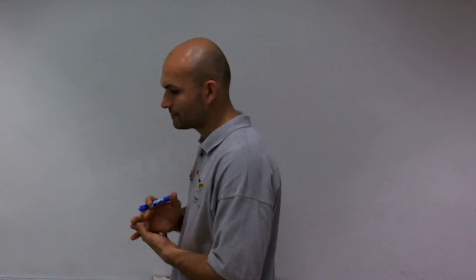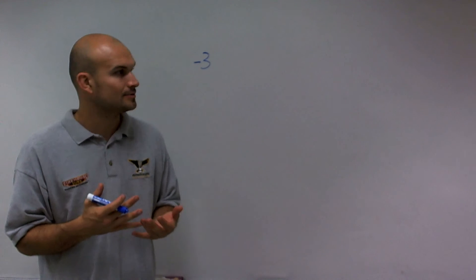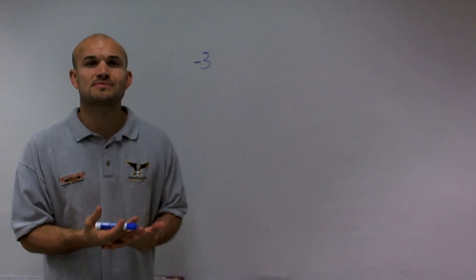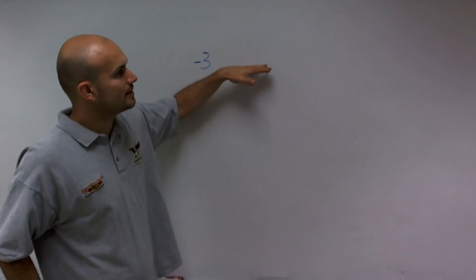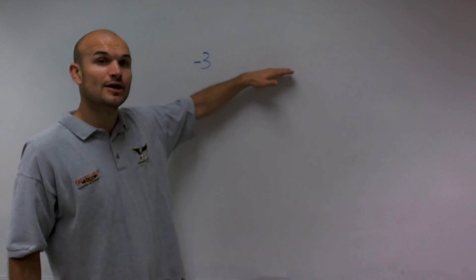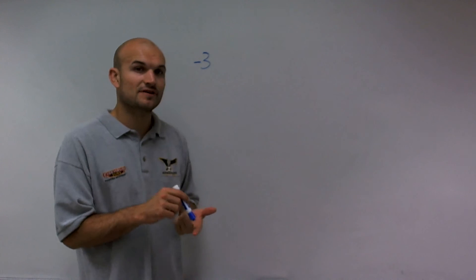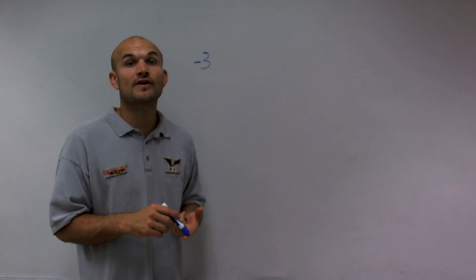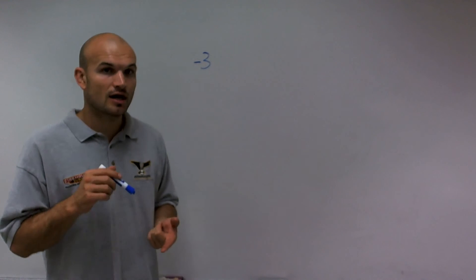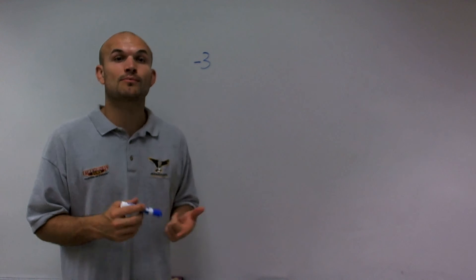To classify negative 3, we want to think about the different types of polynomials. Remember, a monomial is defined as a number, a variable, or the multiplication of a number and one or more variables.